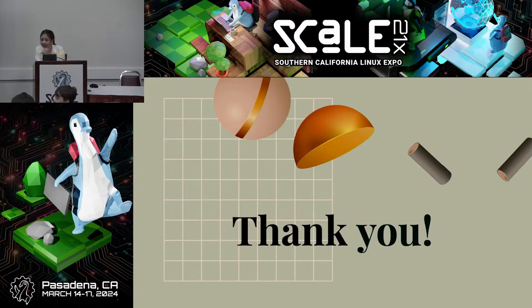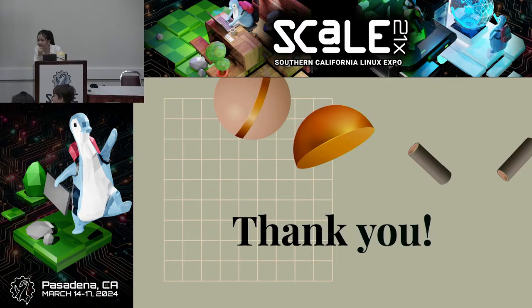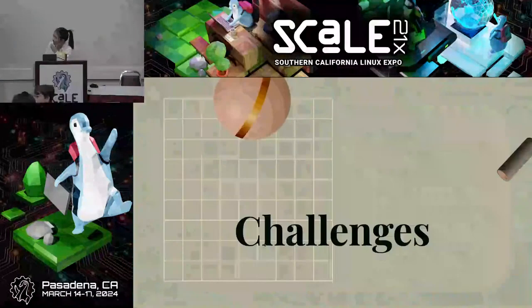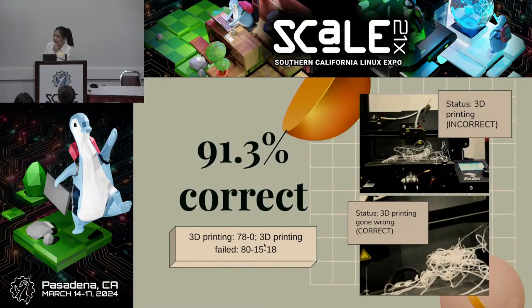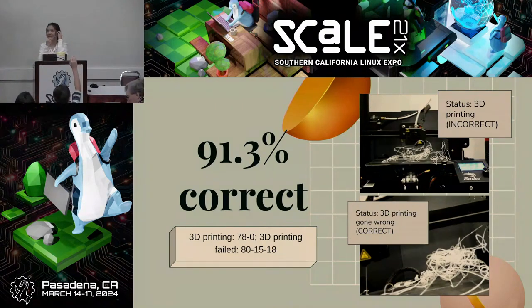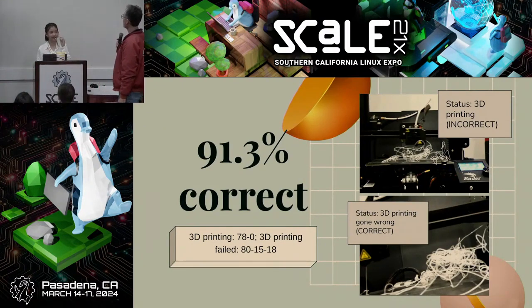Another questioner asked whether the training data was black and white — which it was — and whether the model was trained on the Raspberry Pi or a larger machine. Christine confirmed she trained it on the Pi. She clarified the images appear black and white because the printer is black and the filament is white. The session closed with a compliment: it was a great project and a really good presentation.